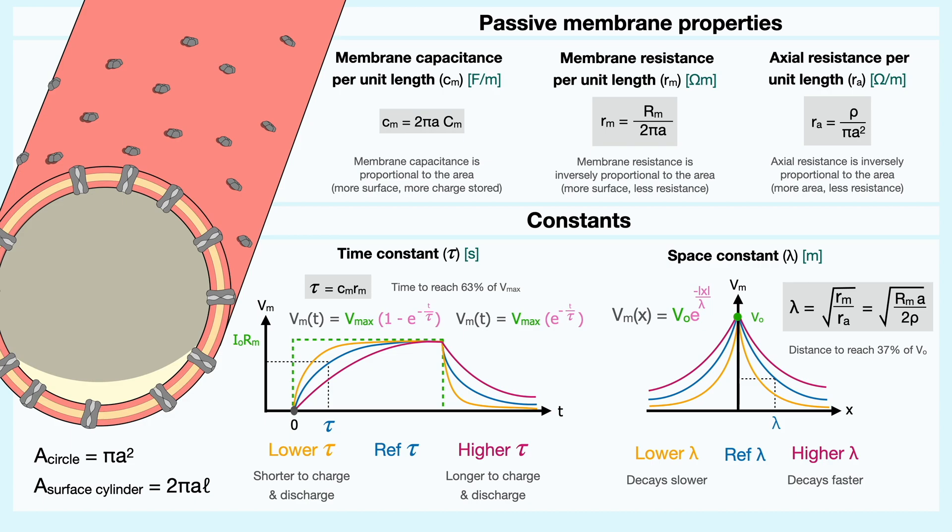One final note to consider about the two constants is that the time constant, which is given by the product of the capacitance and the membrane resistance, is solely a property of the membrane. Whereas, as we've seen, the space constant is dependent on the radius, and thus it is a geometric property of the neuron. Anyway,